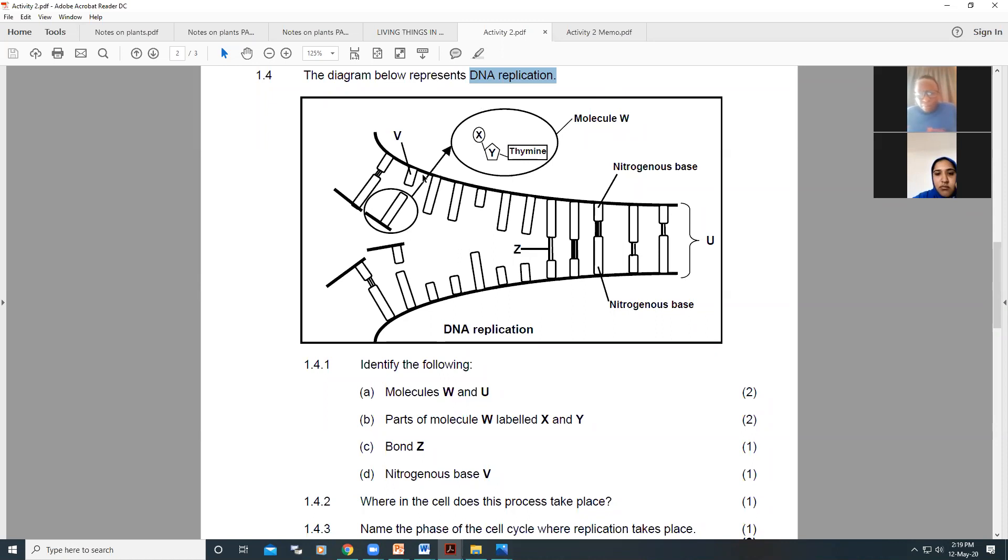Then if we look here, they showed you that this was thymine. What would V be then? Obviously, this is coming straight from your complementary pairing. That's adenine. Perfect.